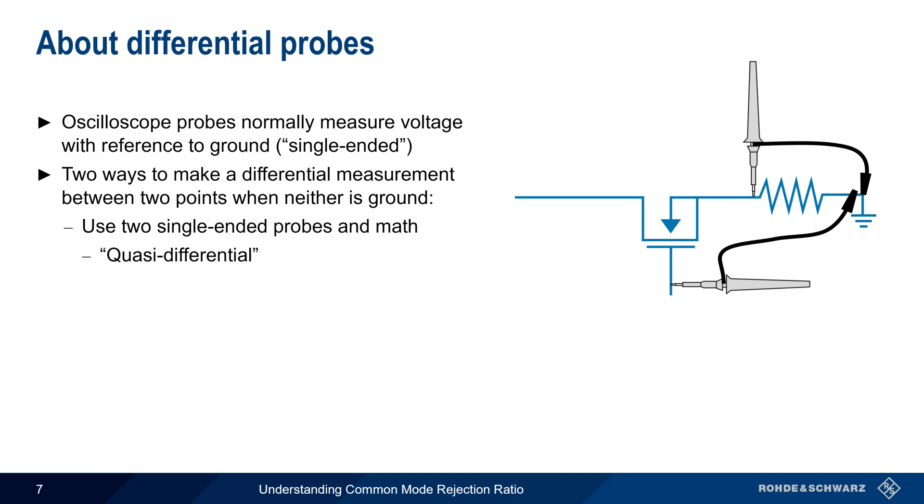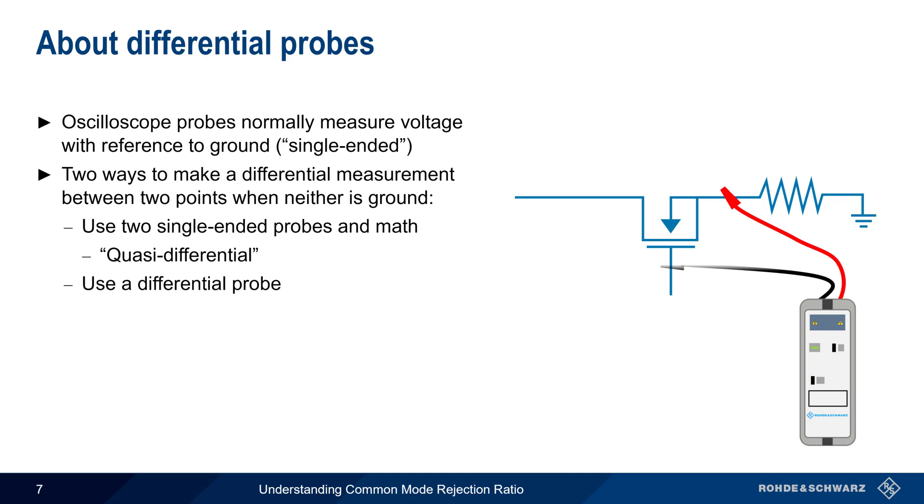A better approach is using a differential probe, which has an internal differential amplifier, which produces a voltage that corresponds to the difference between the voltages at the two connection points.